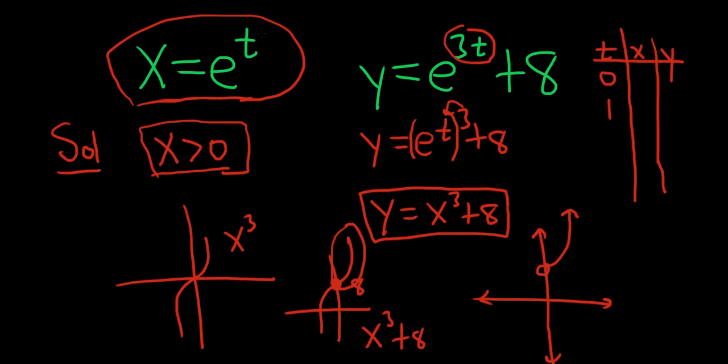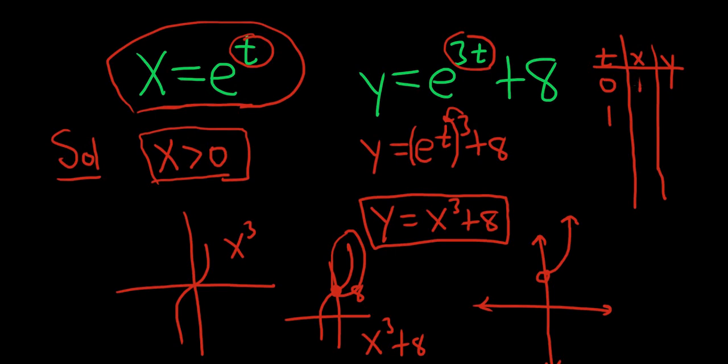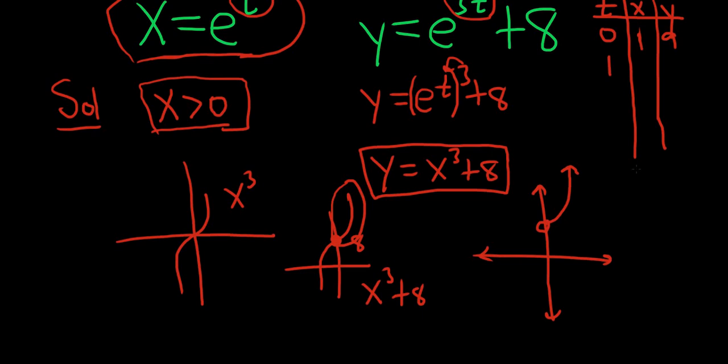Plugging in 0, we get e to the 0, which is 1. And then here we get e to the 0 plus 8, which is 1 plus 8, which is 9. So when t equals 0, we're at 1 comma 9. So we're up here. So maybe like right here.